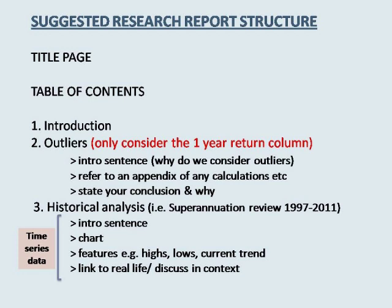In terms of calculations, you only need to consider the possibility of outliers for the one-year returns data. If you do find any outliers, you will need to think about whether to leave them in or remove them completely, such that the whole row would then be deleted. In the report, your outlier section will begin with an intro sentence introducing the idea of an outlier and explaining why they need to be considered. You can then state what data was tested for outliers and refer the reader of your report to an appendix with a summary of the calculations. State your findings, and if you do find outliers, you will need to finish the section by stating what was done with any outliers as well as the motivation behind the decision.